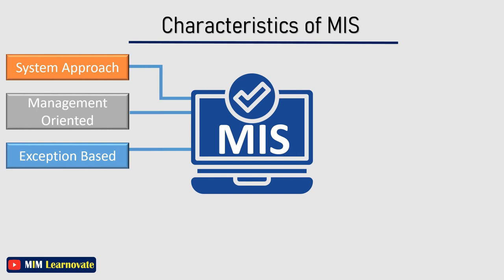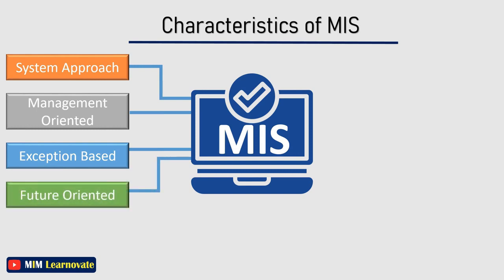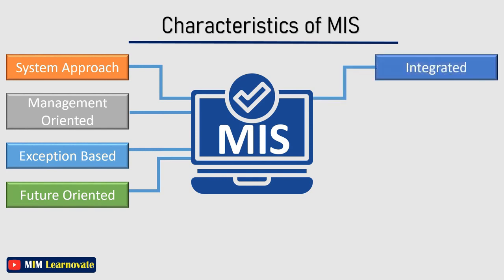Besides exception-based reporting, MIS should also look at the future. In other words, MIS should not only provide past or historical information, but should also provide information based on projections upon which action may be initiated. Integration is a necessary characteristic of a management information system, significant because of its ability to produce more meaningful information.